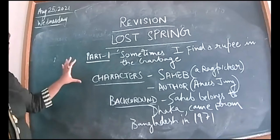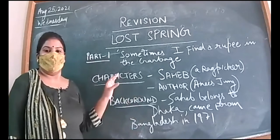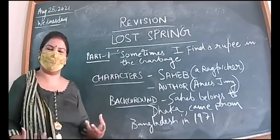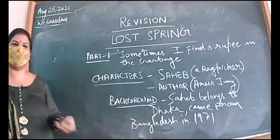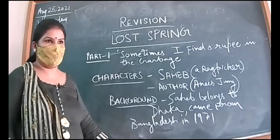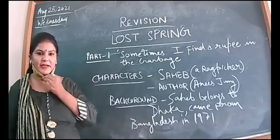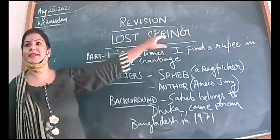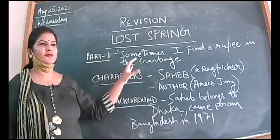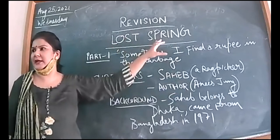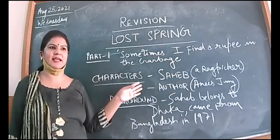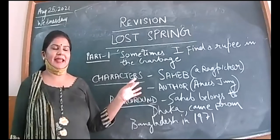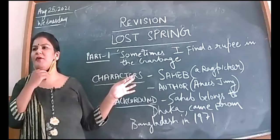Lost Spring is very important because it has two parts, so many questions can come from it. Spring is the season when all the plants are rejuvenating, flowers are fully bloomed, trees and plants can be seen. Spring is associated with growth, happiness, and rejuvenation. But 'Lost Spring' means when growth is not there, when happiness is not there. That's why author Anees Jung chose this title — the children Sahib and Mukesh have lost their spring.